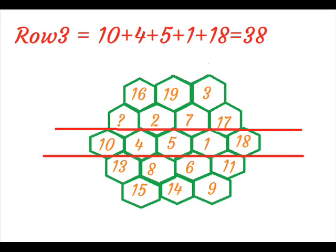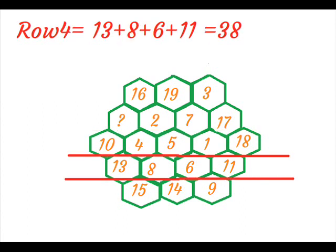On adding row 3, we get 10 plus 4 plus 5 plus 1 plus 18 is equal to 38. On adding row 4, we get 13 plus 8 plus 6 plus 11 is equal to 38.